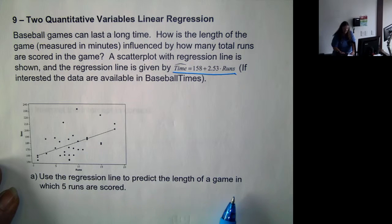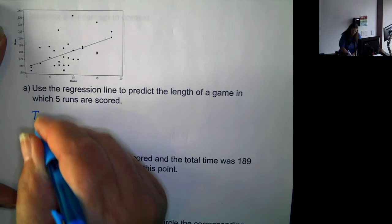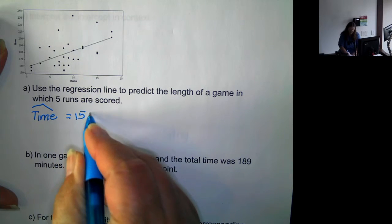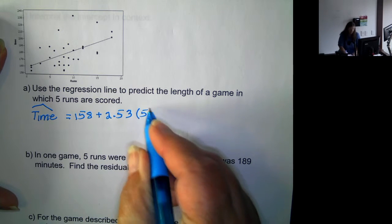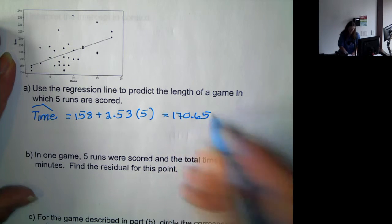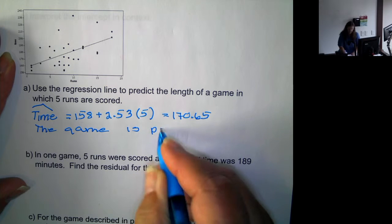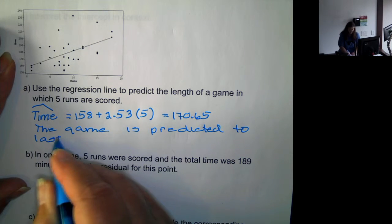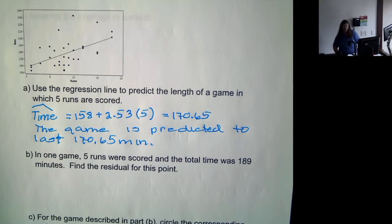So we want to use the regression line to predict the length of a game in which five runs are scored. So we would predict the time. Now we use the hat over the time because it is a prediction. It's not an actual value. So this is 170.65 for the number of runs. This is 170.65. So the game is predicted to last 170.65 minutes if five runs are scored.